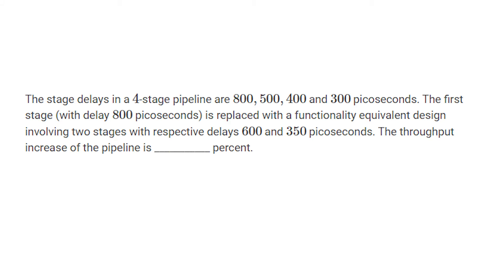The first stage with delay 800 picoseconds is replaced with a functionally equivalent design involving two stages with respective delays of 600 and 300 picoseconds. The throughput increase of the pipeline is blank percent.